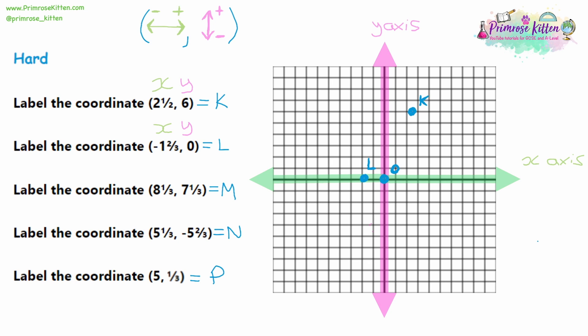Moving on to question 3: x-axis is eight and a third, y-axis is seven and one third. The x value is positive, so we go eight to the right, then another third — 1, 2, 3, 4, 5, 6, 7, 8 and a third — and mark roughly where that is on the axis. Then for the y-axis, count up seven and a third: 1, 2, 3, 4, 5, 6, 7, and a little bit above seven for a third. Where those two marks intercept is where we place our dot. Be careful not to be on the intersection of the grid lines, which represent whole numbers. Label that M.